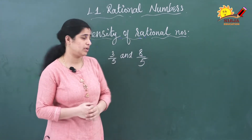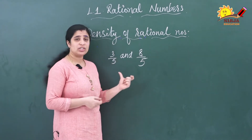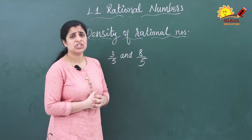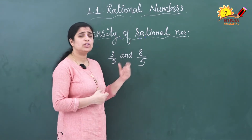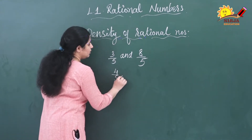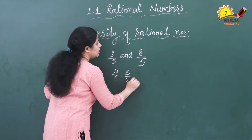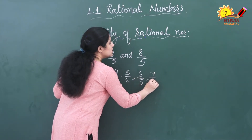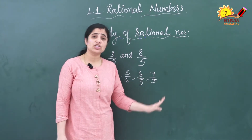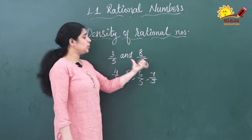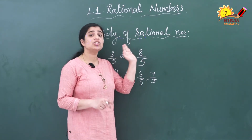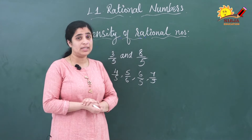Now we will see the density of rational numbers. What is density of a rational number? I have written two rational numbers here: 3/5 and 8/5. How many rational numbers will be there in between these two numbers? You can write 4/5, 5/5, 6/5, and 7/5 — that means you can write four rational numbers in between these two rational numbers.